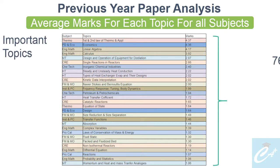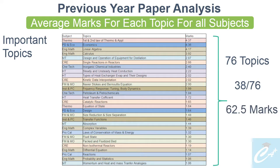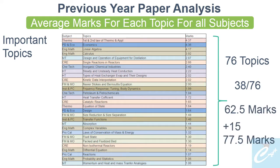In total, there are 76 topics across all subjects. So if you cover the first 38 topics, which are 50% of your syllabus, you will get around 62.5 marks. Plus if you add 15 marks of aptitude, the total will be 77.5 marks. How to get this list we will discuss in the last section.